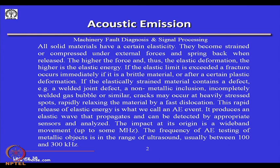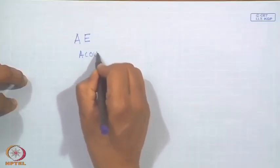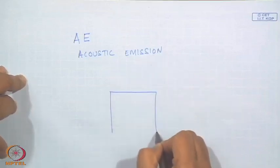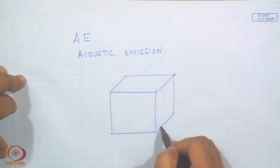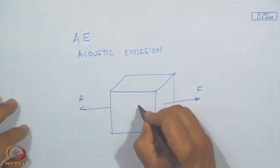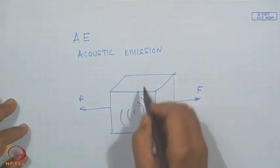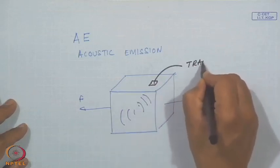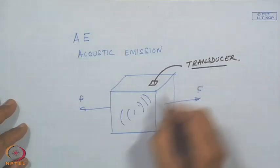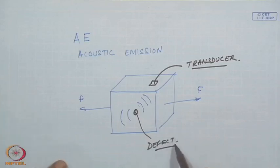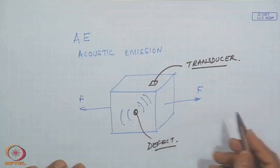The peculiarity of this energy — known as acoustic emission — is that when a body is stressed, whether you are pulling it with some force, it gives out some sort of energy in all directions. If this energy can be sensed by a transducer, it gives a clue as to the defect or condition. If there is no defect the amount of energy will be different; if there is a defect, this amount of energy will be different.